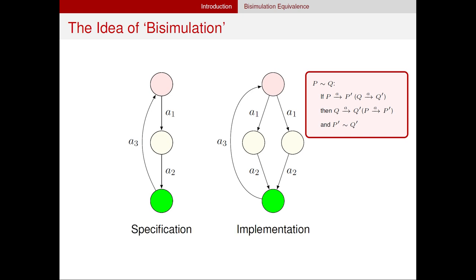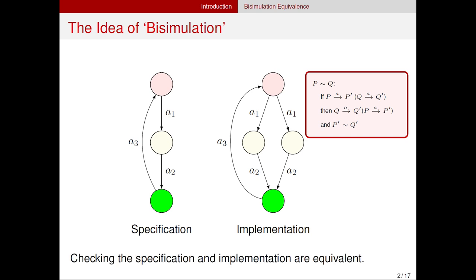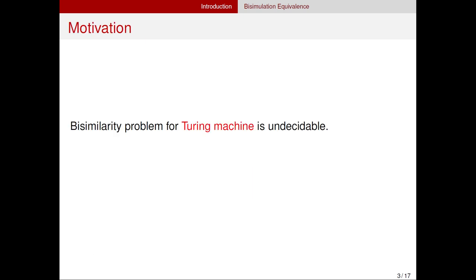Usually in the process of software development, the product manager builds something called a specification, which describes the behaviors of a system. Then the engineers give an implementation. The question is: does the implementation meet all the requirements of a given specification? The bisimulation equivalence describes such an equivalence relation — after doing the same action, the two systems can go to the same state, and then they can be regarded as equal. Unfortunately, the bisimilarity problem for Turing machines is undecidable, like many other problems on Turing machines. So a natural question is: can we reduce the capacity of the system to make the problem decidable?